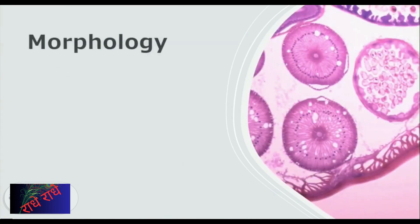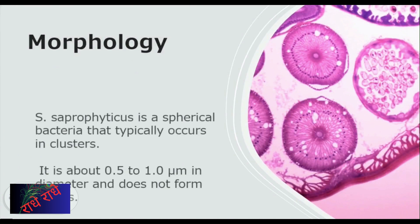S. saprophyticus typically occurs in clusters and can be seen under the microscope as round cells, measuring 0.5 to 1.0 micrometres in diameter. It does not form spores, setting it apart from other types of bacteria.